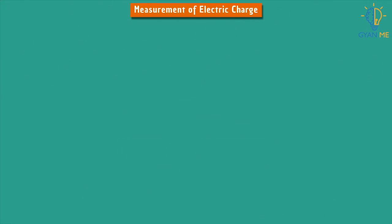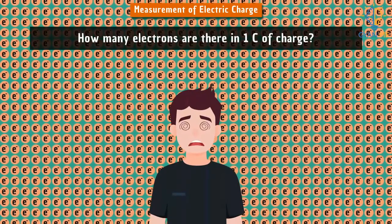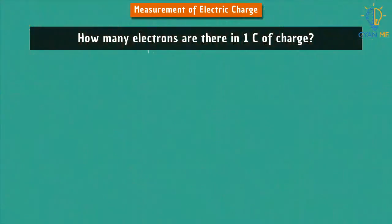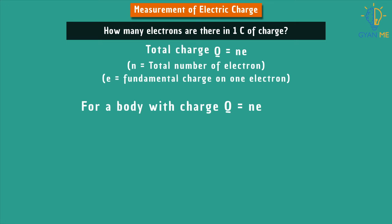Now a question may arise in our mind: How many electrons are there in 1 coulomb of charge? Let us answer this question. We know that total charge Q = ne, where n is the total number of electrons and e is the fundamental charge on one electron. For a body with charge Q, Q = ne.